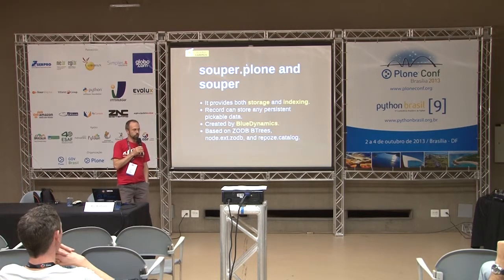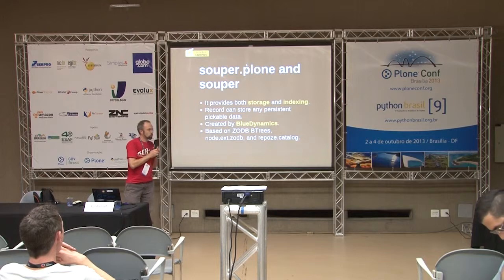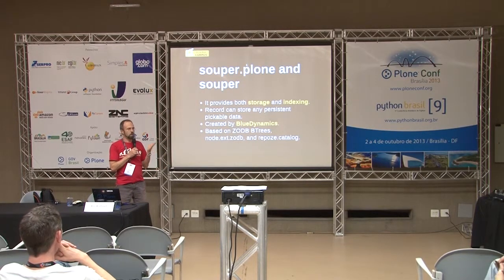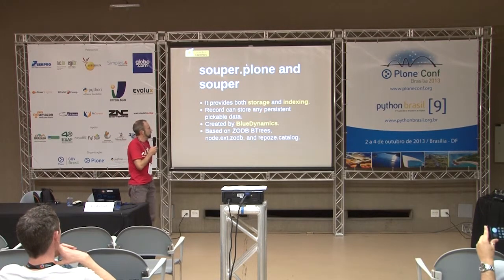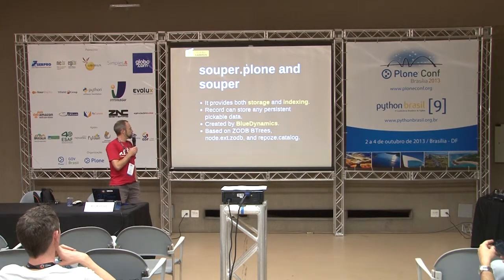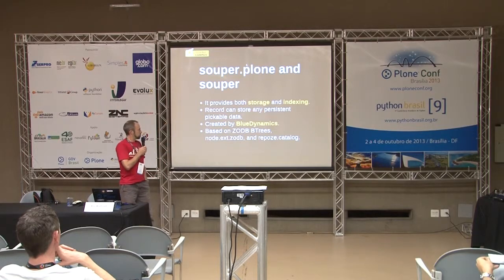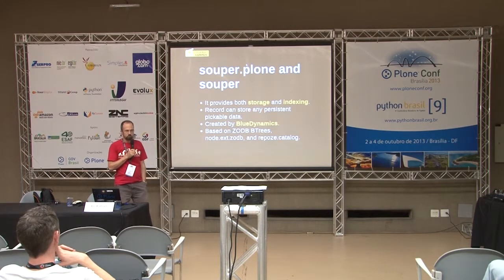Souper Plone and Souper are two packages which provide storage and indexing into your ZODB for tiny records, but a big amount of tiny records. Basically, it's just a way to record any picklable data in a persistent structure. It's based on BTree, ZODB BTree, and it uses node.ext.zodb, which is really nice. And it just uses Repoze Catalog to index. It has been created by BlueDynamics. Those people rock.